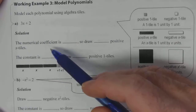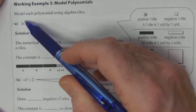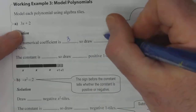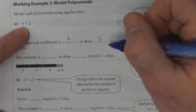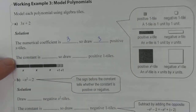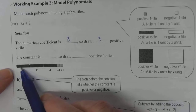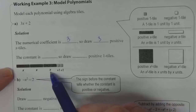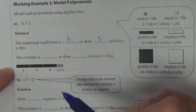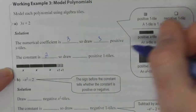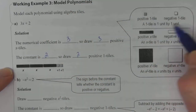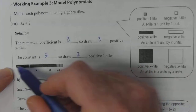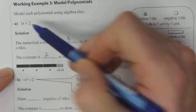Model each polynomial using algebra tiles. For 3x + 2: the numerical coefficient is three, and x is positive, so we need to draw three positive x tiles. We've got three bars that are shaded in — that's one, two, three x tiles. The plus two is the constant, so we draw two positive one tiles. Positive one is shaded, so we have two little positive ones. This diagram represents 3x + 2.